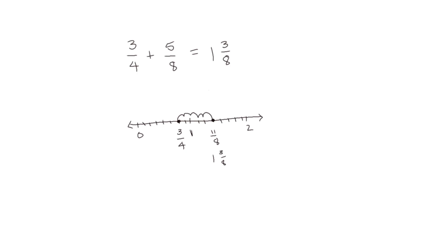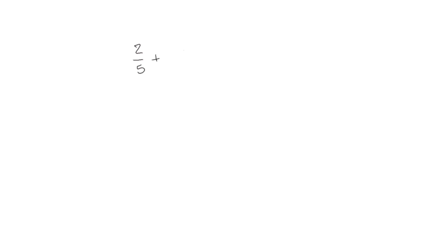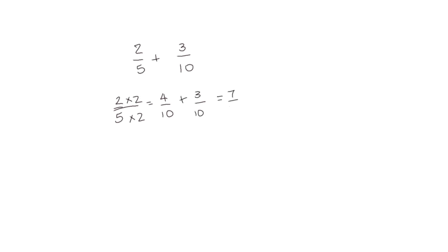We can also use what we know to add two fractions with related denominators without using a model. Going back to equivalent fractions, 5 and 10 are related numbers because 5 is a factor of 10. If I want to decompose the fifths into tenths, I multiply the numerator and denominator by 2 to get 4 tenths, which I can now add to 3 tenths for a sum of 7 tenths.